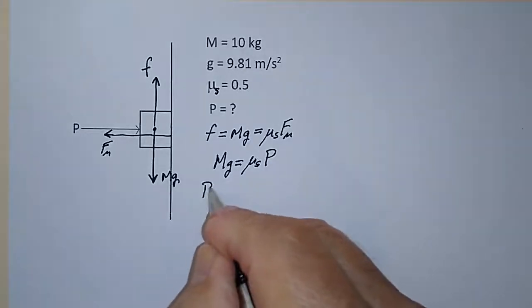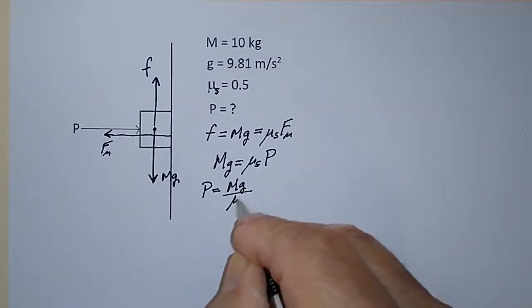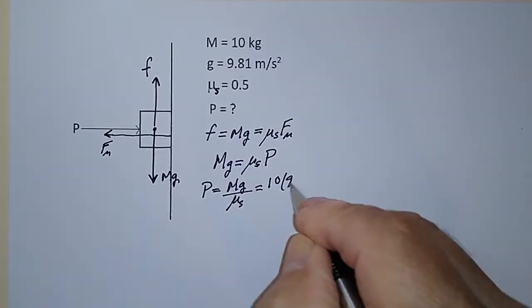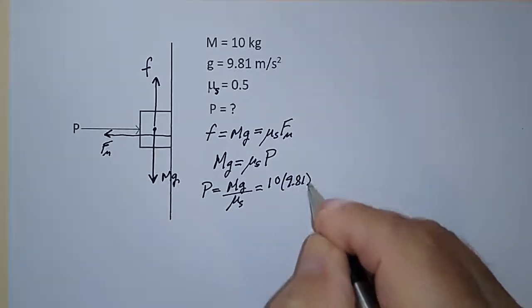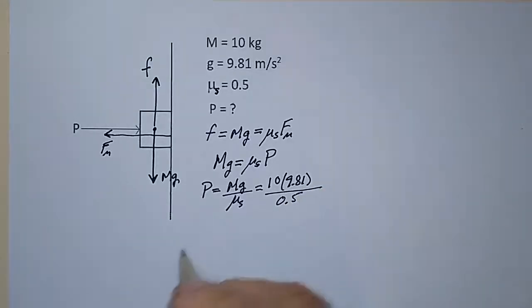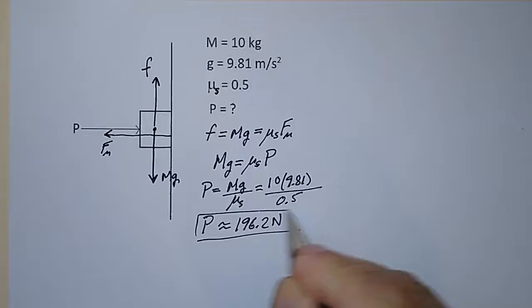Consequently, P is equal to mg over mu sub s, and that's equal to 10 kilograms times g, which is 9.81 meters per second squared, divided by 0.5. If you stick that in the calculator, P comes out to be approximately 196.2 Newtons. That's how you work that problem.